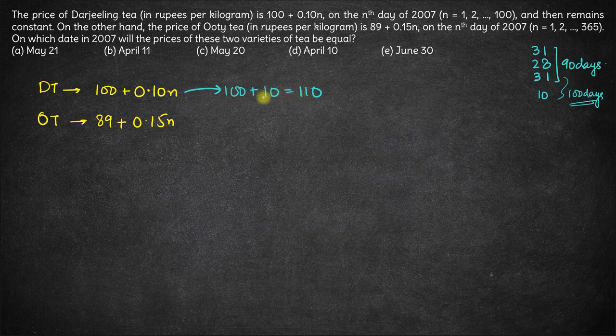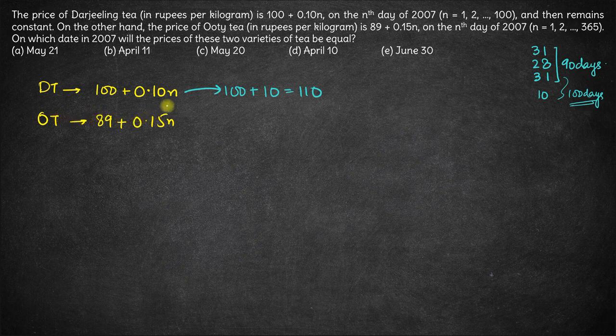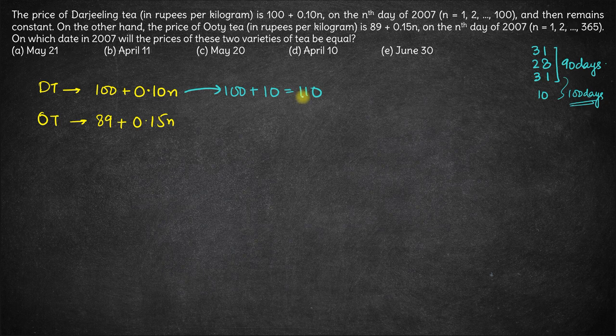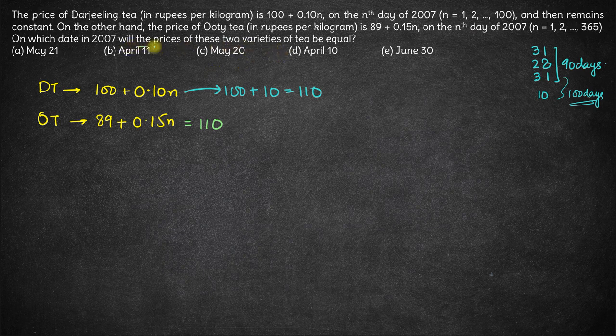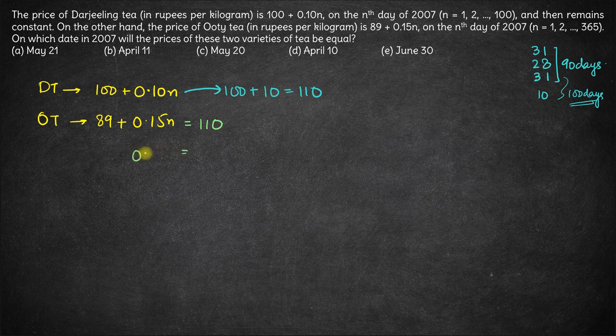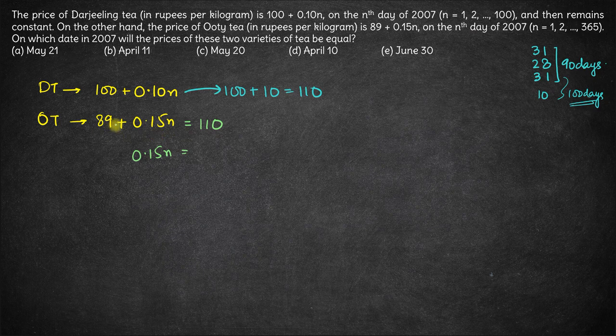That effectively means OT's price should become equal to 110 and we need to figure out when that will happen. For the prices of the two varieties to be equal, both these values should be equal. So from here, we have 0.15n = 110 - 89 = 21.